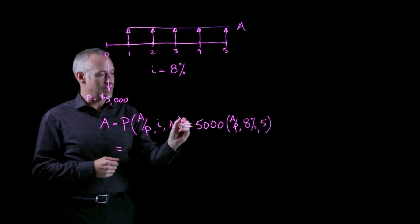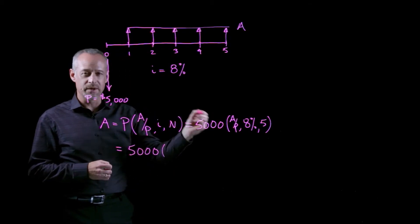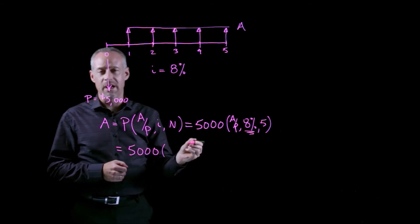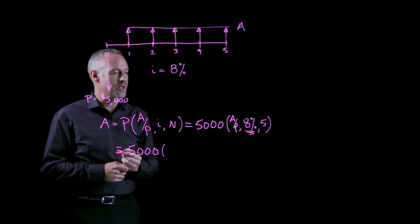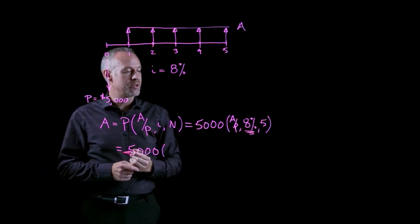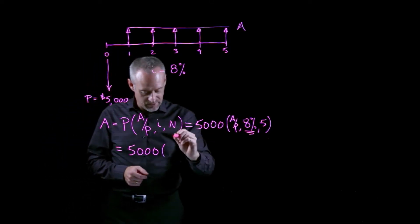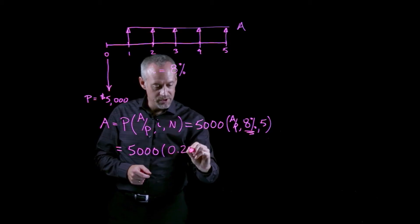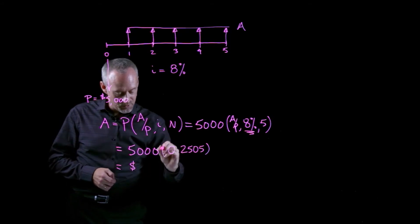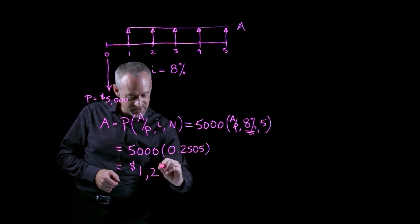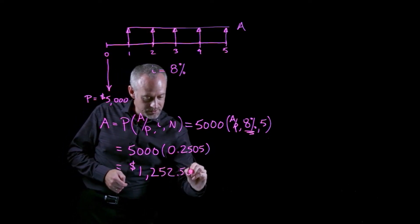So if we work out what that is, 5,000 times the A given P factor for 8% and 5. Now you can go to a compound interest table. Because this is a nice round number of 8%, we should be able to find an 8% interest table. We look for the row corresponding to 5 years and we look in the A given P column. And if we do that, you should come up with a factor of 0.2505. We multiply that by 5,000. We end up with the value of the annual savings as $1,252.50.